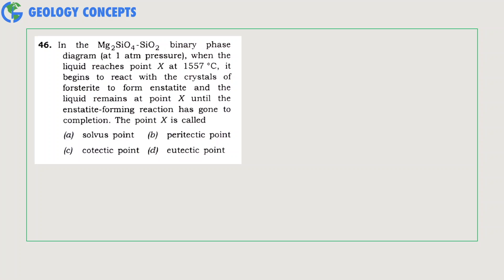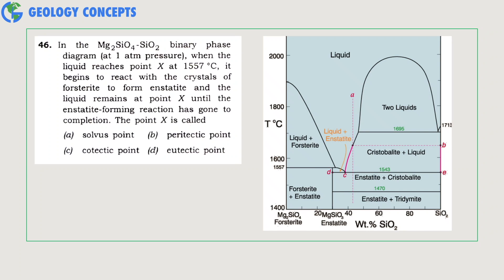In a forsterite-silica binary phase diagram, when the liquid reaches point X at 1557°C, it begins to react with the crystals of forsterite to form enstatite, and the liquid remains at point X until the enstatite-forming reaction has gone to completion. This point X is called what? Solvus, peritectic, cotectic, or eutectic? As you can see in the diagram, point X is an invariant point at 1557°C where liquid, enstatite, and forsterite exist simultaneously. This is called a peritectic point. Hence, option B is the right answer.